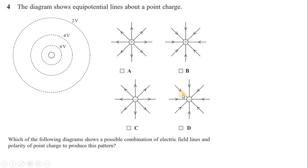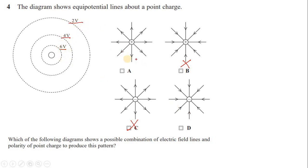Question 4: the diagram shows equipotential lines around a point charge — 6V, 4V — decreasing positive values. Which diagram shows the correct combination of electric field lines and charge polarity? Options B and C are eliminated immediately: B shows a positive charge with field lines coming in (wrong), and C shows a negative charge with field lines going out (wrong). Since the potential values are positive and decreasing outward, this must be a positive charge, so the answer is option A.